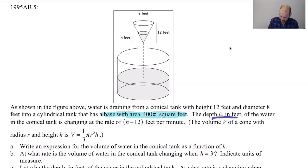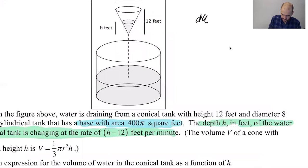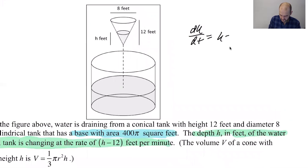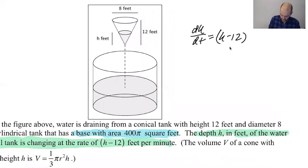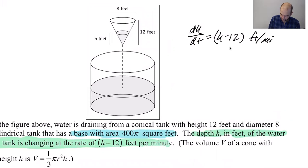The depth H in feet of the water in the conical tank is changing at the rate of H minus 12 feet per minute. So that's a strange thing, but the depth of water in the conical tank, H minus 12 feet per minute. So I'm going to write that down. So dH/dt is going to be H minus 12, and that's feet per minute.